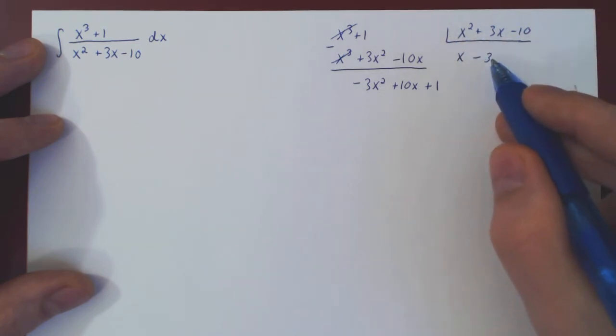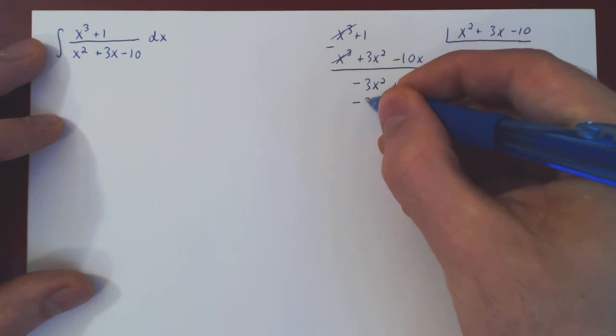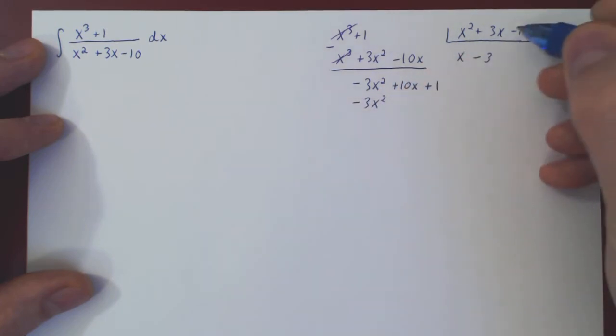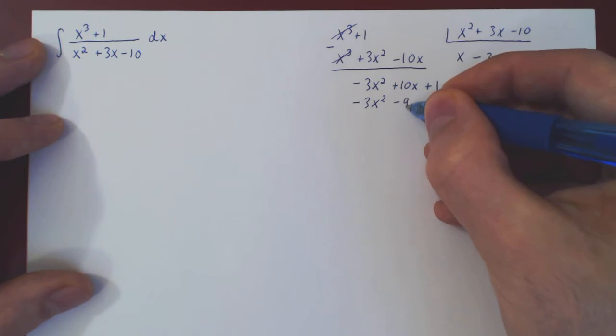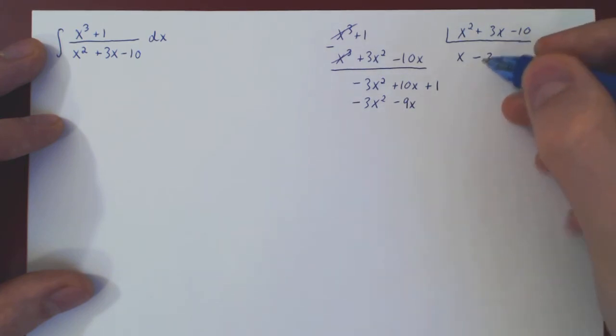Multiply through by negative 3, so you get negative 3x squared, minus 9x, positive 30.